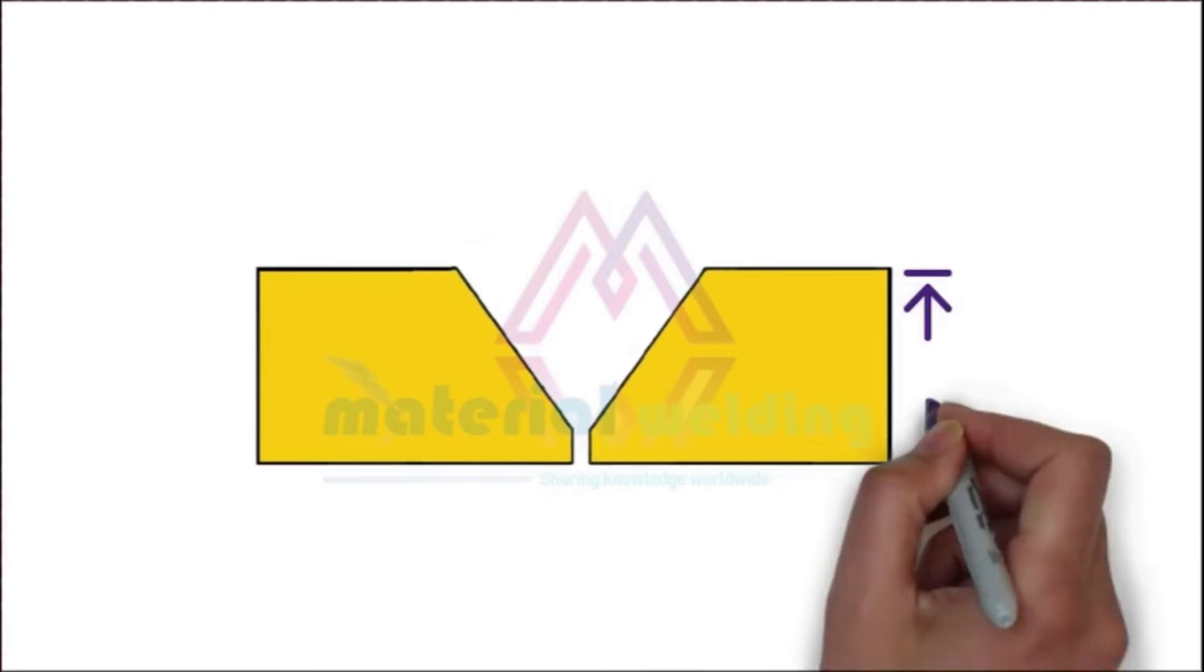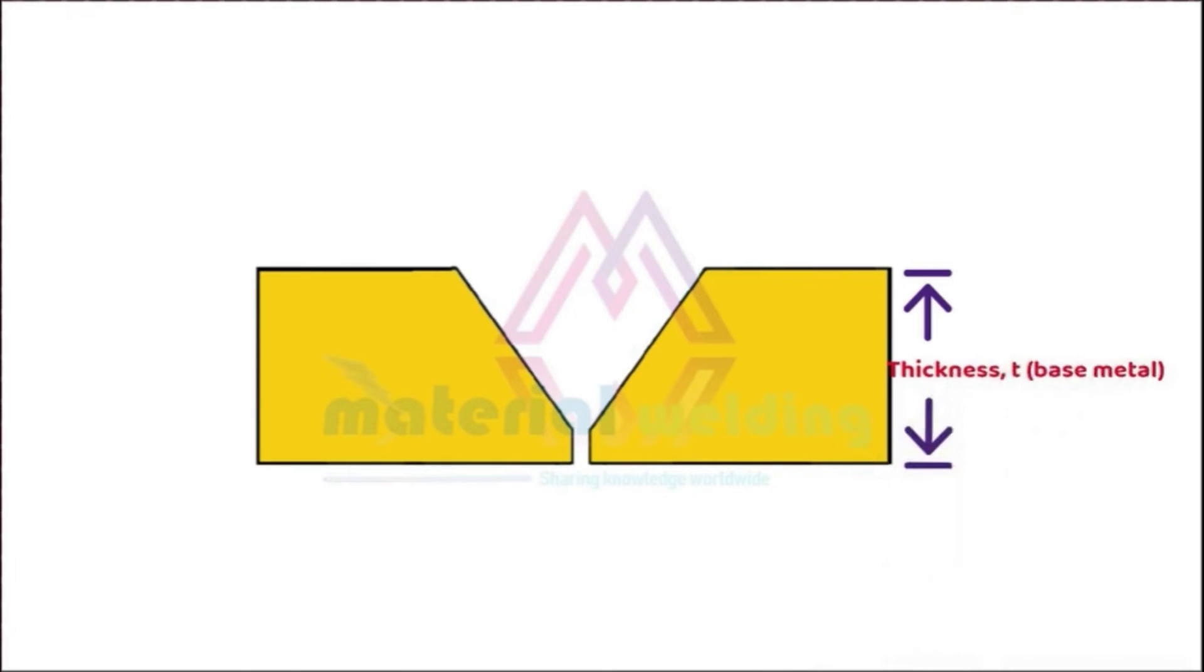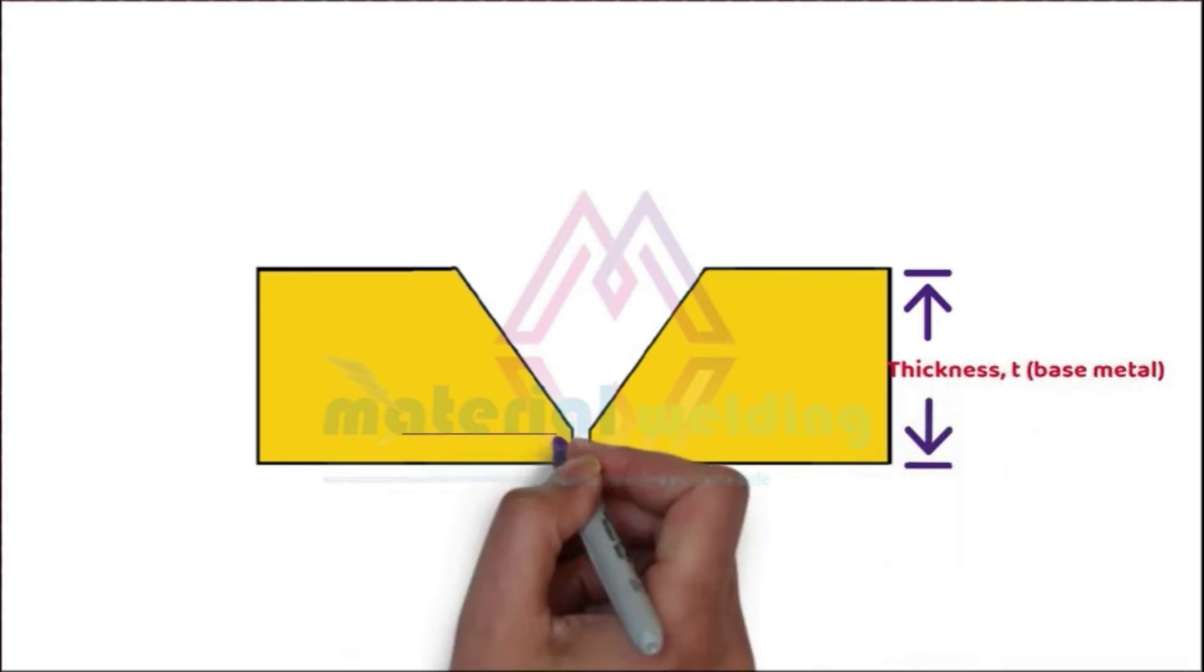For a groove weld joint, you need a plate member. Here they are shown as base metal 1 and base metal 2. The thickness of the plate is usually given as T, which means base metal thickness. The broad area under the weld bevel is called the root face.